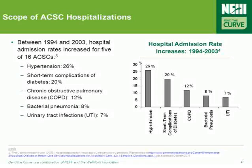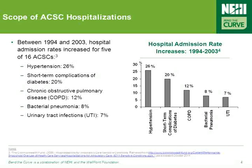To give you an idea of the size and scope of this issue, between 1994 and 2003, hospital admission rates increased for five ambulatory care sensitive conditions: hypertension, diabetes, COPD, bacterial pneumonia, and urinary tract infections, or UTIs.